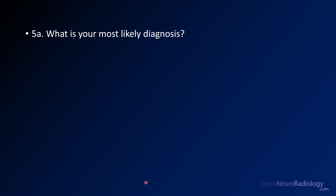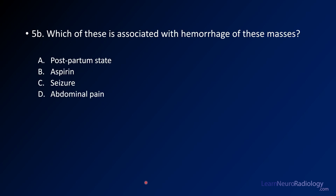If you've seen a theme in these videos, that's usually going to be the first question — that's usually what the ABR is going for on its simplest questions. Our second question is: which of these is associated with hemorrhage of these masses? This is a second-order question; you have to have a pretty decent idea of what this mass is. Is it postpartum, aspirin, a seizure, or abdominal pain?